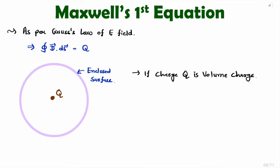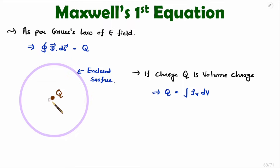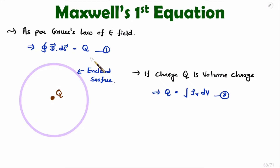Here, if I consider this charge as volume charge, then one should know this charge Q is the volume integration of volume charge density. So, if we have volume charge, then this total charge Q is the volume integration of volume charge density.